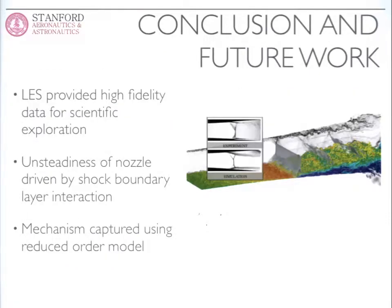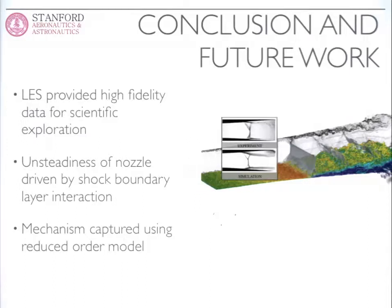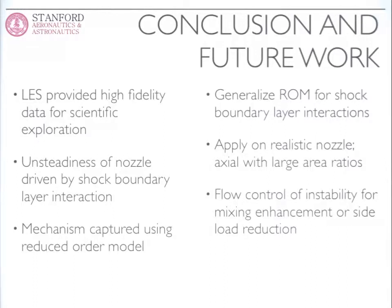To conclude: we've performed a series of high-fidelity LES simulations to elucidate the unsteadiness occurring in rocket nozzles, which — once understood — will lead to more efficient designs of rocket nozzles and propulsion systems. We discovered the mechanism and devised a reduced-order model which is much less expensive and can capture this low-frequency unsteadiness. Moving forward, we'd like to generalize this reduced-order model for all classes of shock boundary layer interactions, try it on a more realistic axial nozzle with a larger and more aggressive area ratio, and look at ways to actively or passively control this instability.